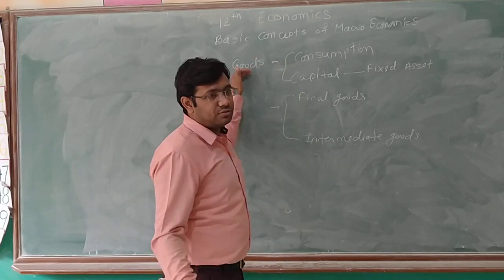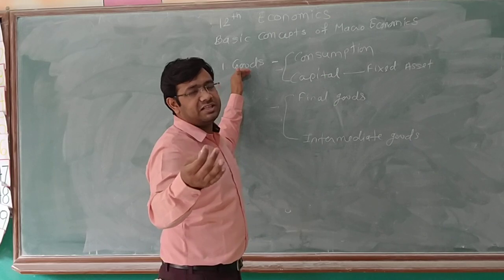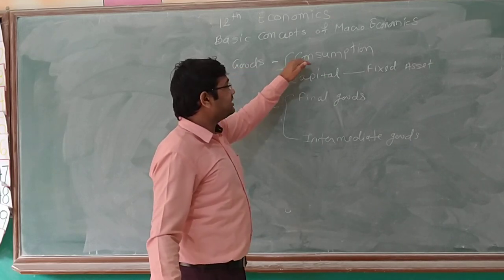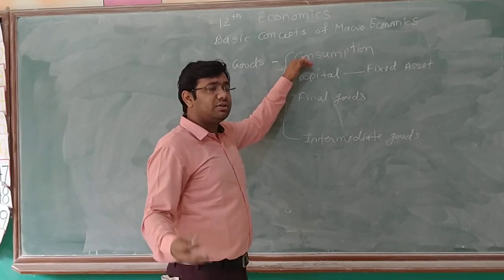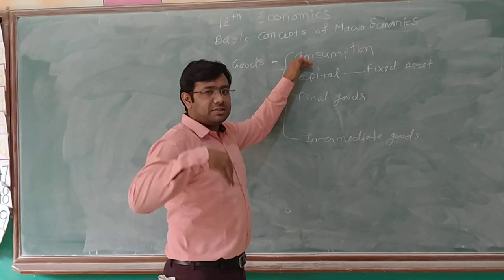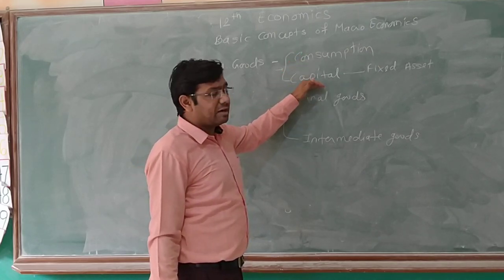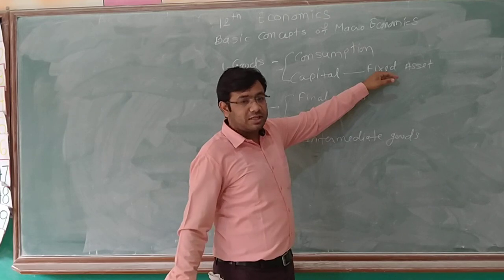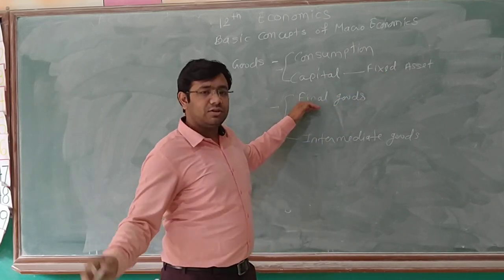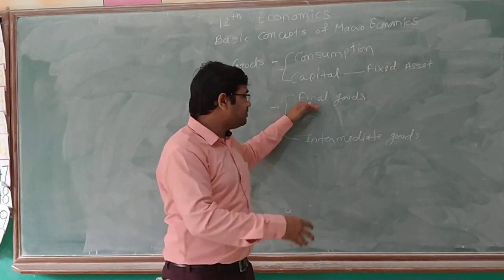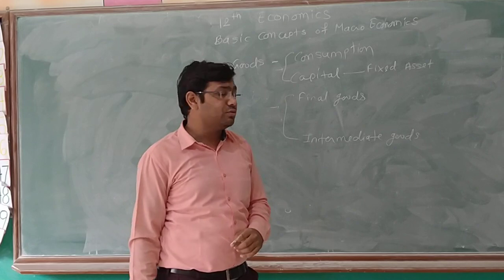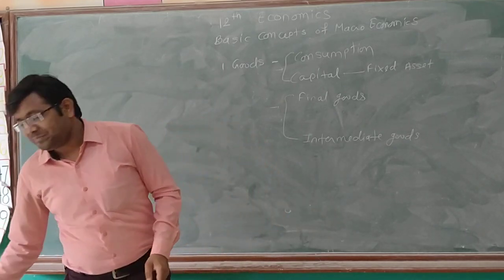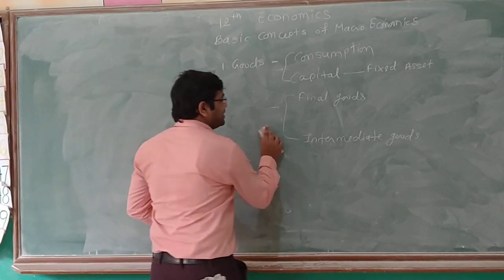Let us learn the goods again. All goods are tangible and intangible items used for satisfaction. One: consumption goods, purchased for direct consumption. Two: capital goods, purchased by businessmen to be used as fixed assets. Three: final goods, which are outside the production boundary. Four: intermediate goods, which are inside the production boundary.